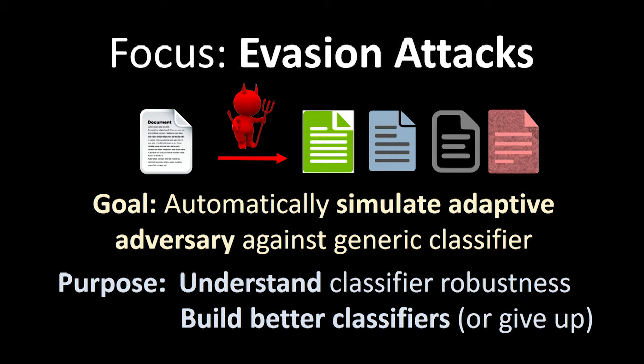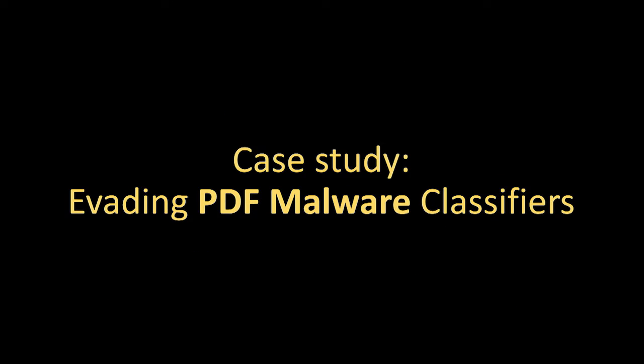Our goal is to understand classifiers in the presence of adversaries — to automatically simulate what an adaptive adversary will do to try to evade a classifier. We hope this will improve our understanding of classifier robustness and maybe enable us to build better classifiers, although in some cases it might force us to give up and realize this approach can't actually work.